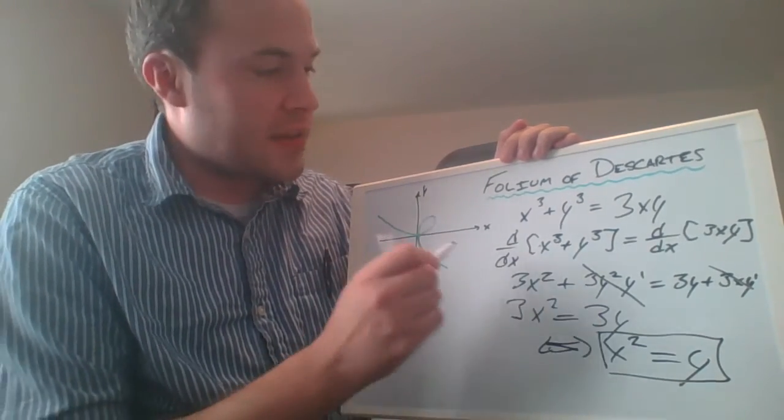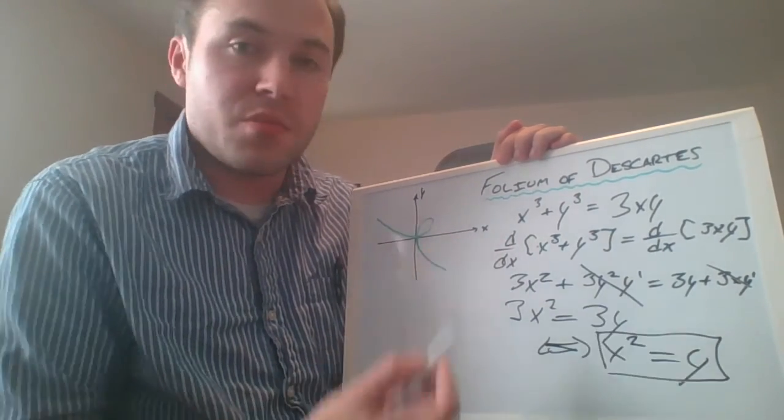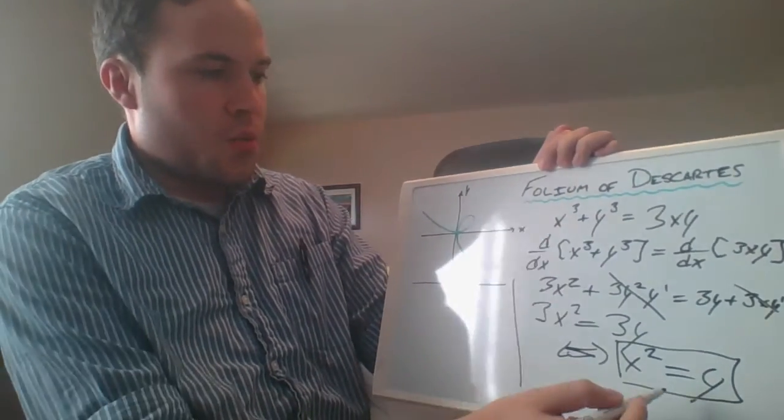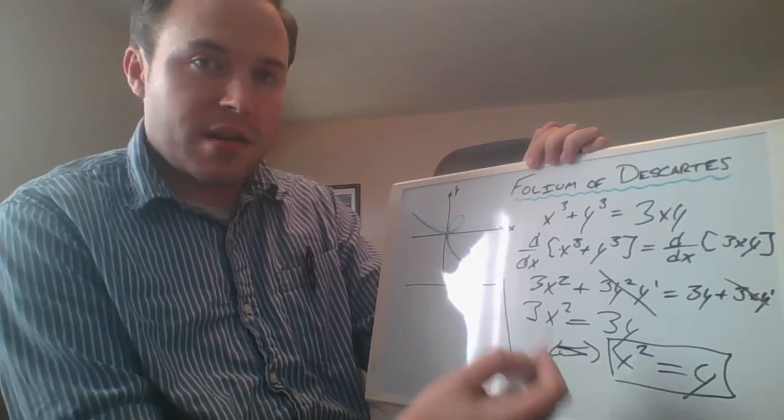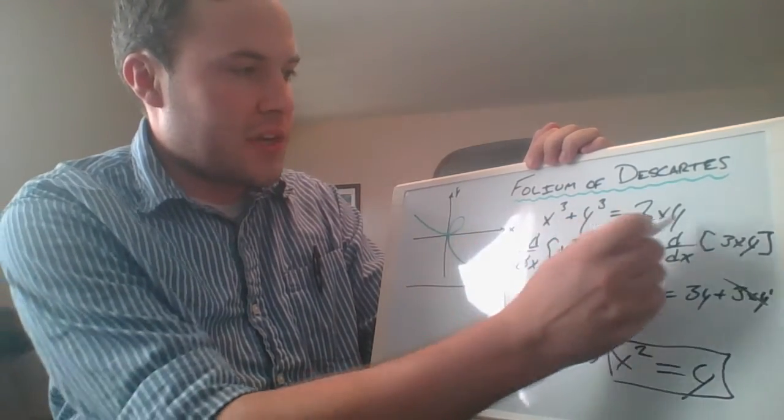If we're going to find the actual point in question, what we have to do is recognize that that point lies on the folium of Descartes. In other words, it has to satisfy this equation up here: x cubed plus y cubed has to be equal to 3xy. We're going to use that to our advantage.